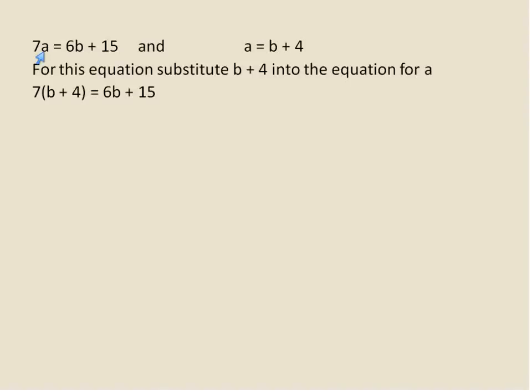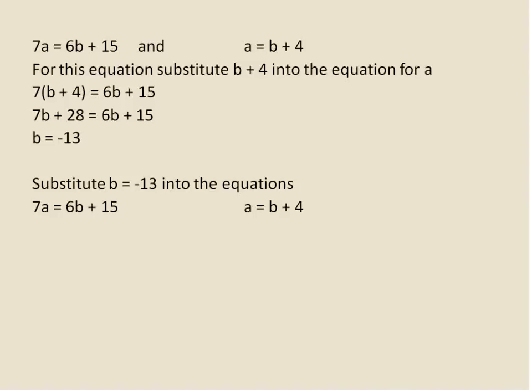I've substituted 7 times (b plus 4) in place of 7 times a. Using the distributive property — 7 times b and 7 times 4 — gives me 7b plus 28. Now I'll join together the b values on the left side by subtracting 6b from both sides of the equal sign. Then I subtract 28 from both sides to move the numbers to the right. I'm substituting into both equations just to double-check and make sure my work is right, since I should get the same answer.